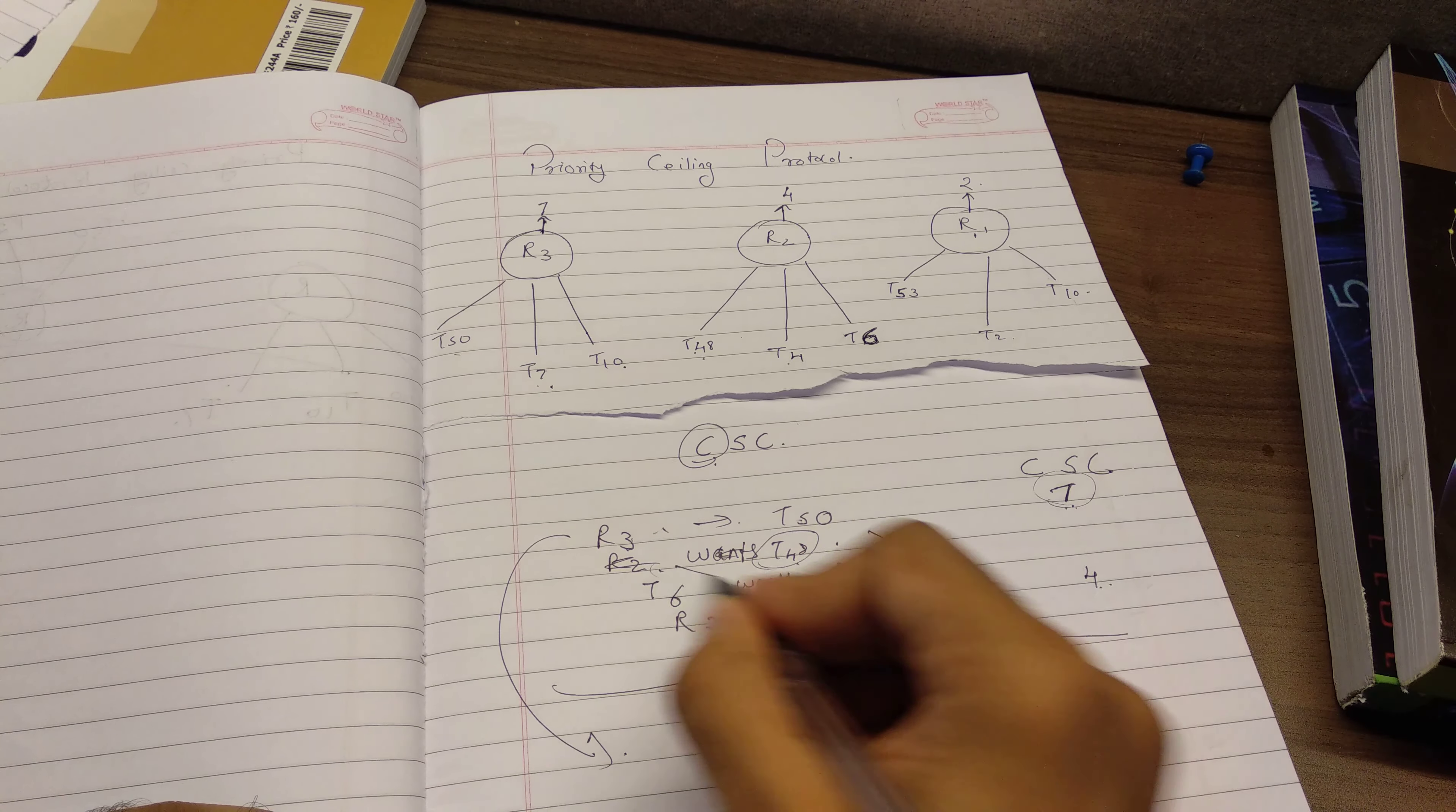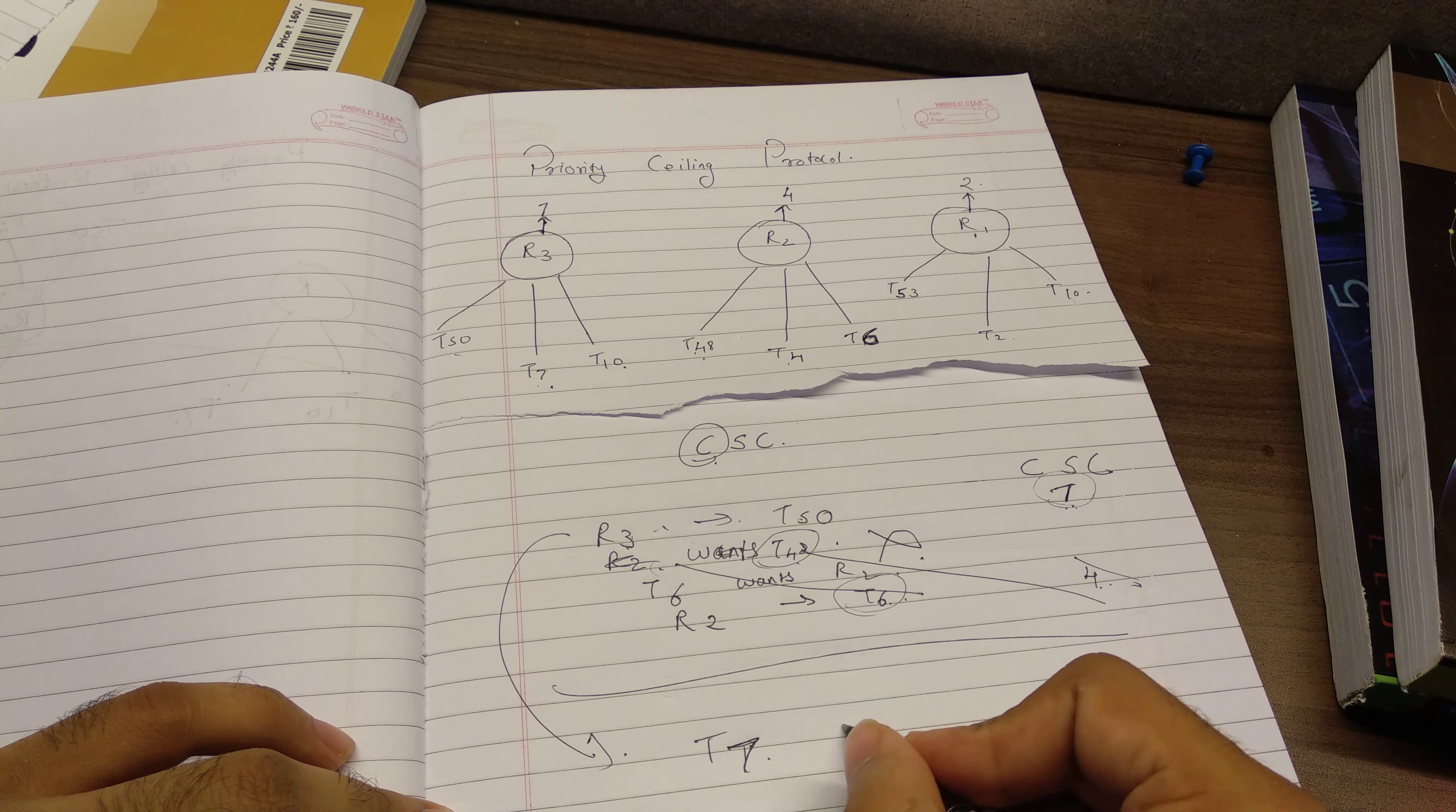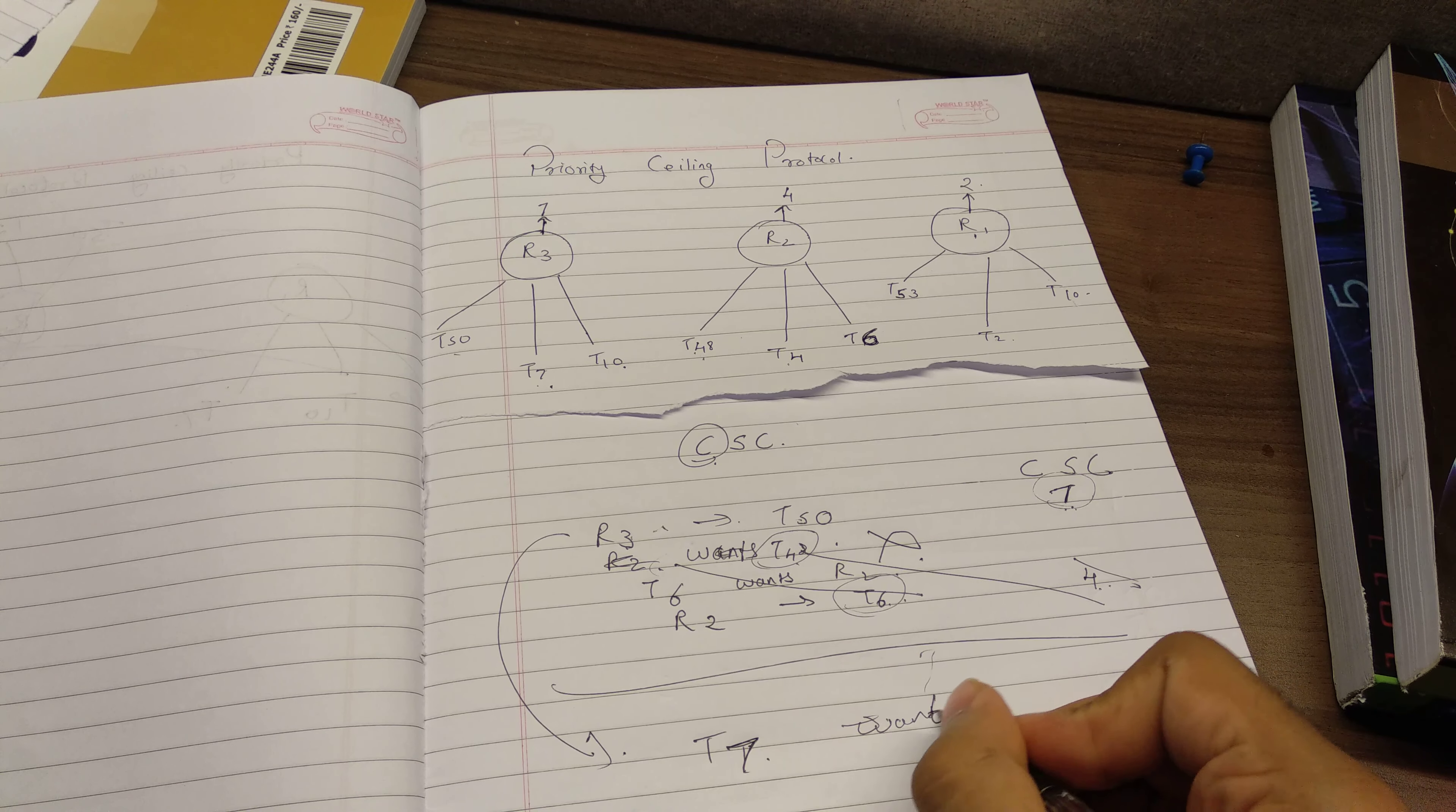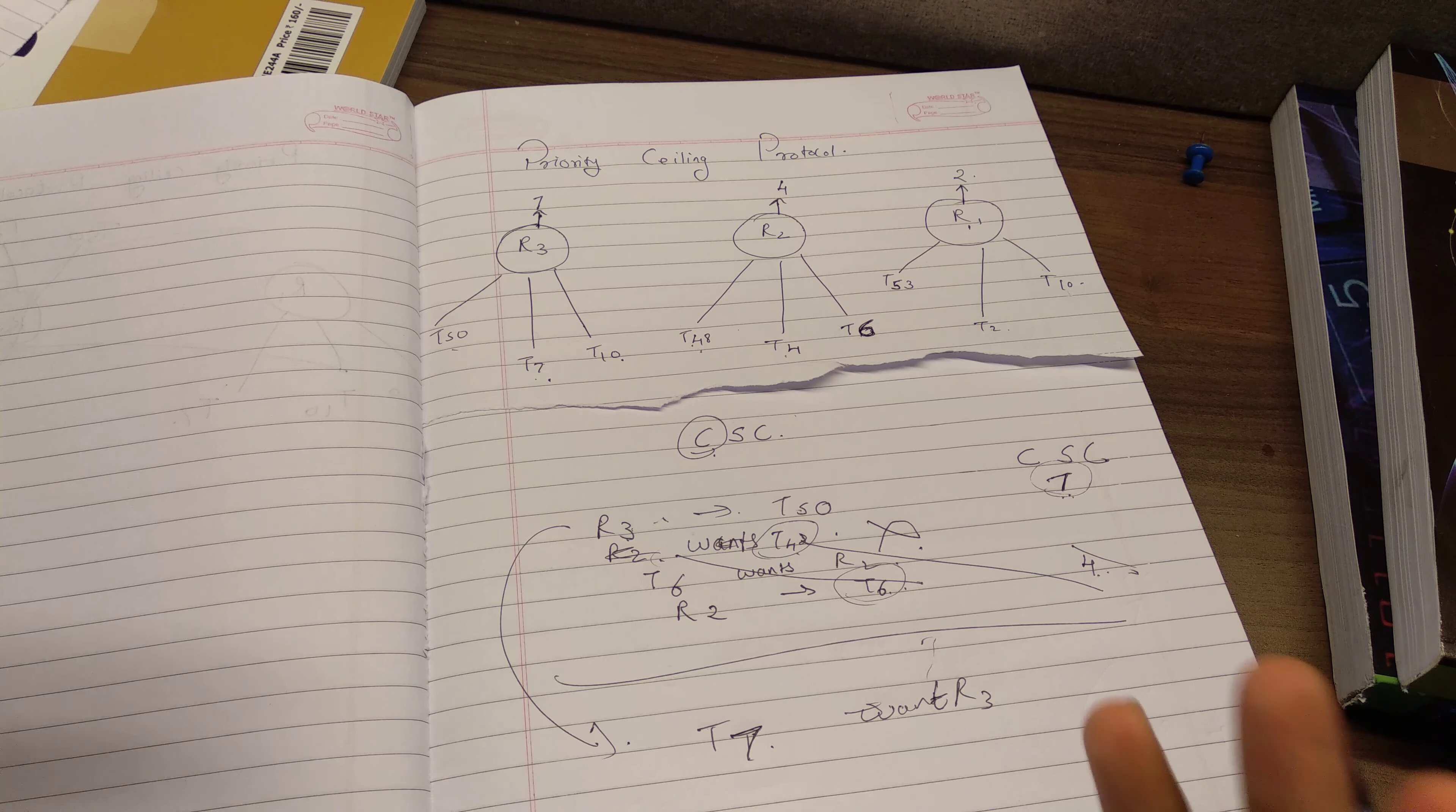But if here, if after this, let's cancel this after this, T7 is to ask for a resource. So T7 is asking for R3, wants R3. Of course, R3 is in use. So T7 will not be granted R3. We should, you should always be careful of this part. Any resource that is currently in use will not be granted to any other. Even if the priority one task wants the resource, it won't be granted because it's in use right now. That is how resource management works.